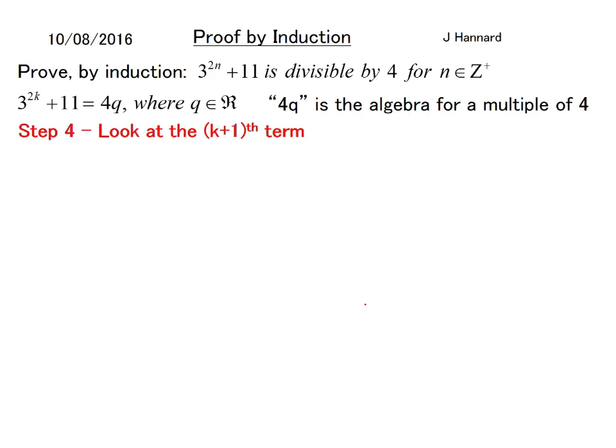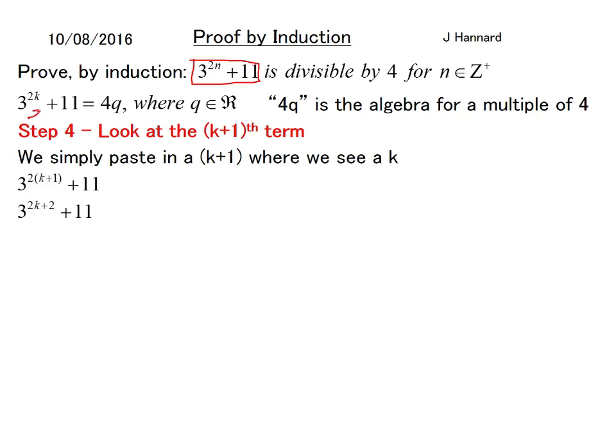So step four, look at the k plus ones term. We still need this. So we simply paste in a k plus one where we see a k. So it's 3^(2k+1) + 11. And of this by the way, I must stress that, I don't think I've made that clear. We don't use the kth statement, we use the original function. So we put k plus one for an n because k plus one is our stopping point. So 3^(2k+2) + 11. Using power laws, we can weasel in a 3^(2k) here.